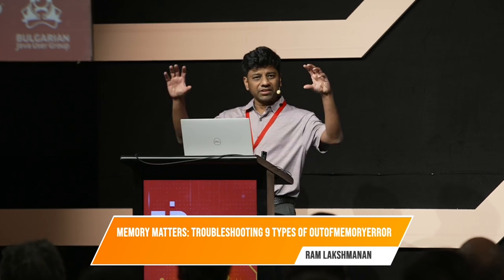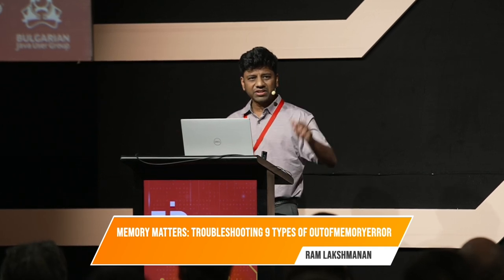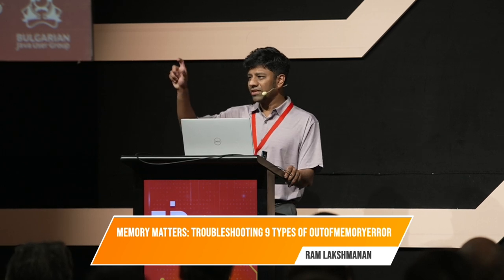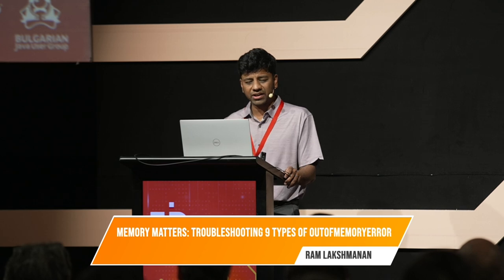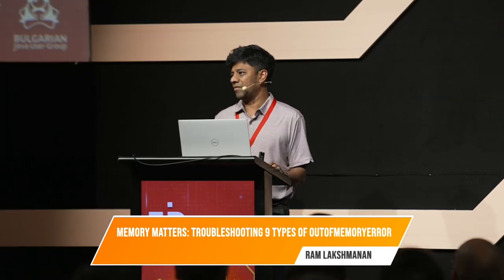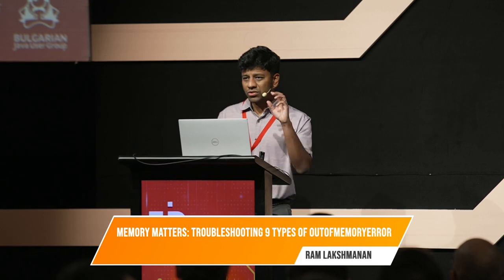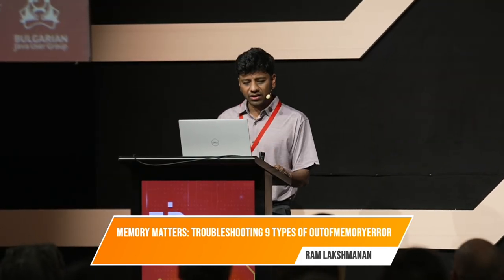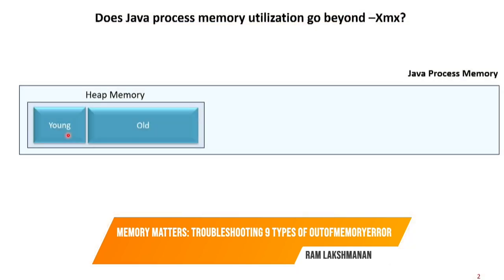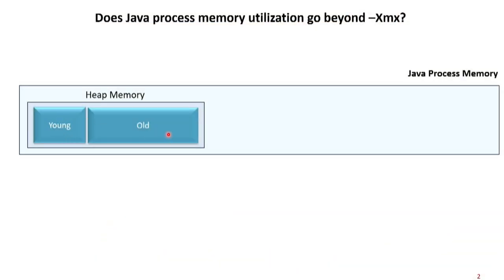There are different JVM memory regions. The first region is called heap memory. Within this heap memory there are two regions: one is called the young generation and another is called the old generation. As a developer, when I write code and create a new object — say I say 'new Car', creating a car object — that object goes to the young generation. If it lives for a longer period, it gets promoted to the old generation. When you set XMX, you are actually only setting the size of the young generation and old generation.